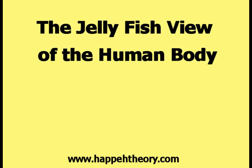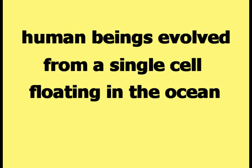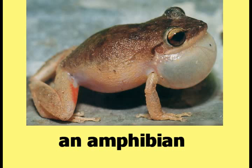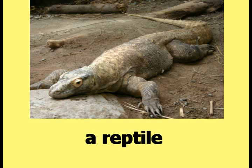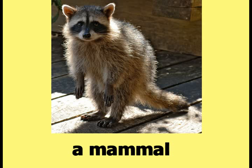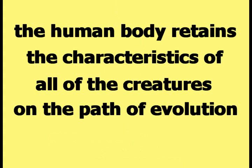This video is about the jellyfish view of the human body. According to Darwin's theory of evolution, human beings evolved from a single cell floating in the ocean. That single cell evolved into a fish, an amphibian, a reptile, an insect, a bird, a mammal, and finally into a human being. According to happy theory, the human body retains the characteristics of all of the creatures on the path of evolution somewhere within itself.